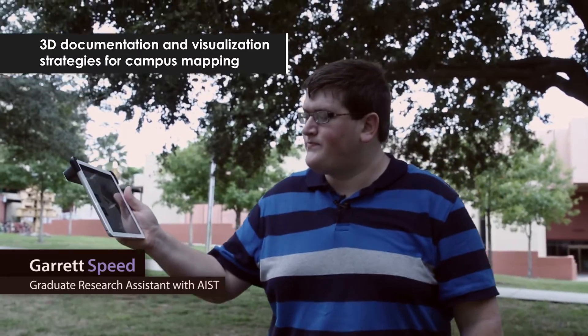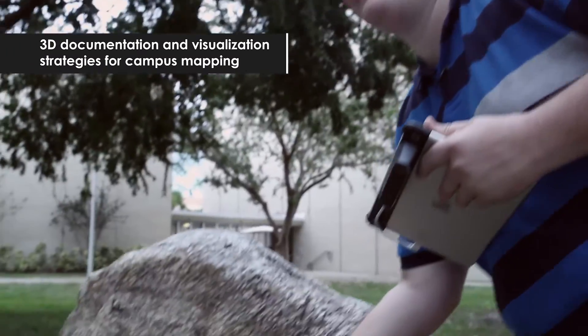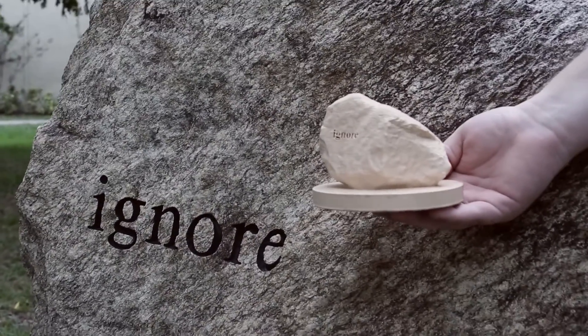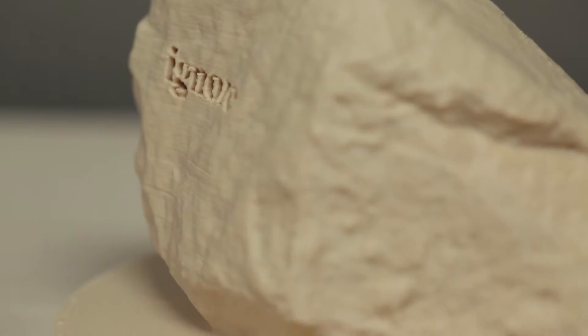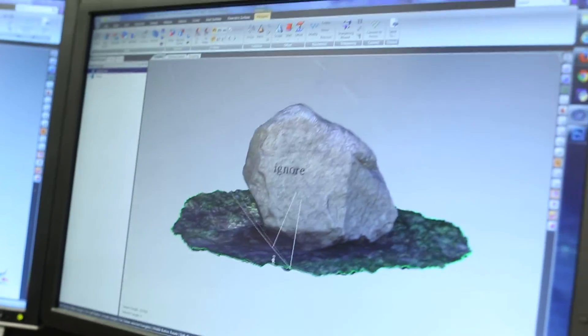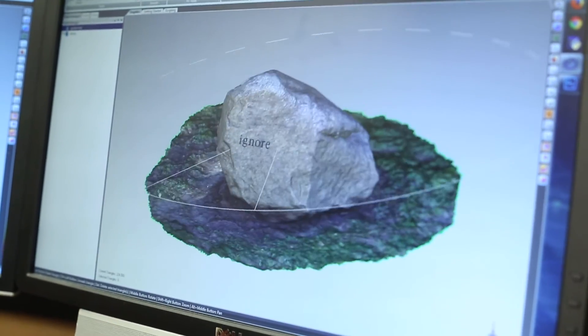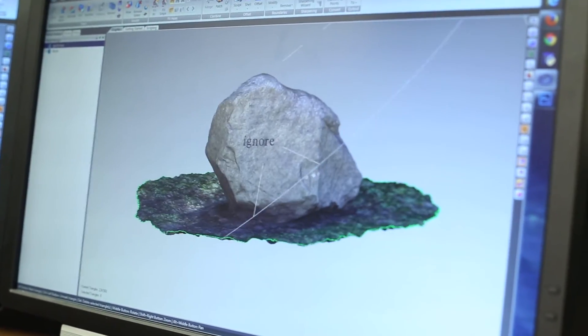So we're trying to create a campus map for the university, and we have larger scanners that can capture large areas, but we also need to capture smaller objects, so we're integrating these smaller things that we can scan with the sense and iSense into our models.